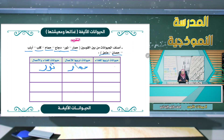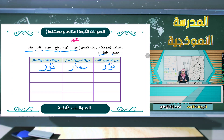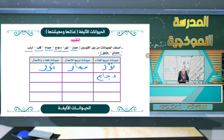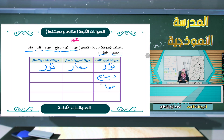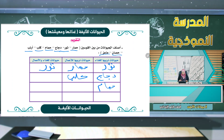حيوانات نربيها للغذاء: الحمار، الثور - نستخدم الثور في الغذاء أيضاً، الدجاج - نستخدمه للغذاء وأيضاً للبيض، الحمام - نستخدمه في الغذاء، الكلب - نستخدمه في الأعمال، الأرنب - نستخدمه في الغذاء.